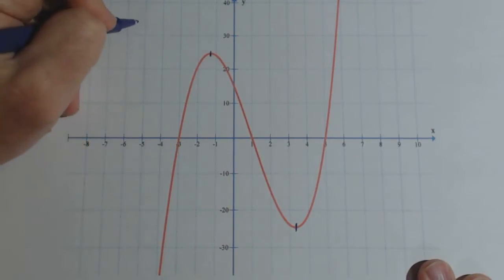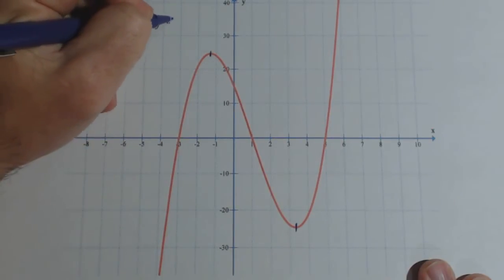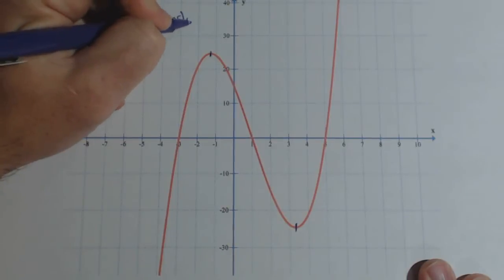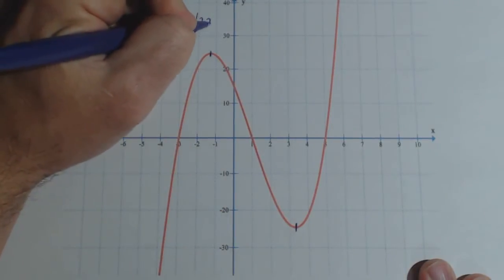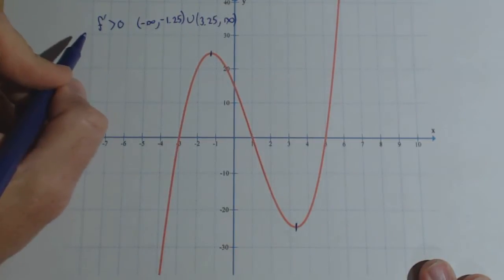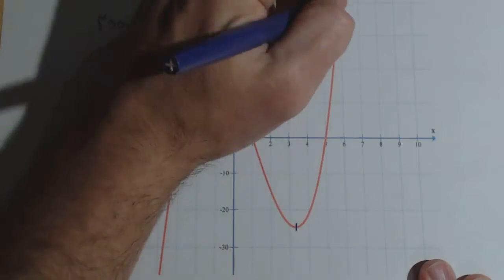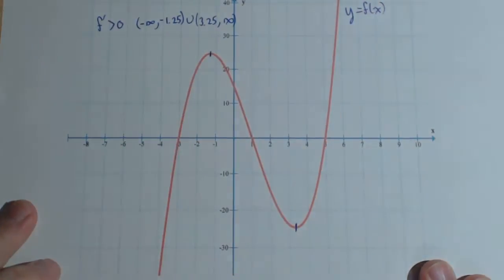So there's two intervals. It looks like we have negative infinity up to about negative 1.25, union about 3.25 up to infinity. And again, what does that tell us? That tells us that f, this being the graph of y equals f of x, is increasing.